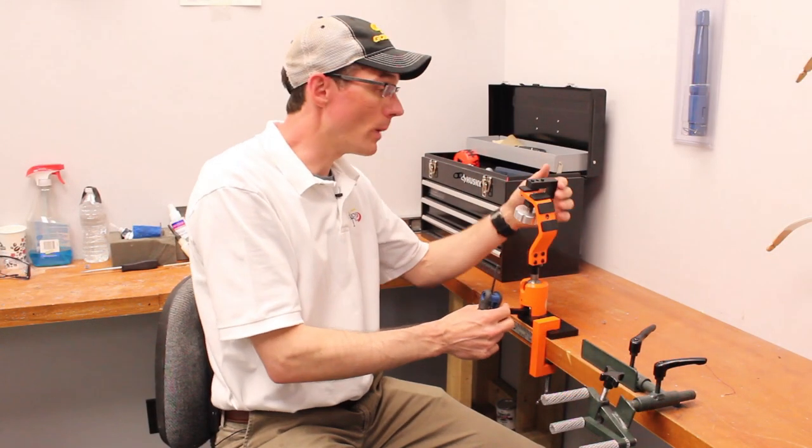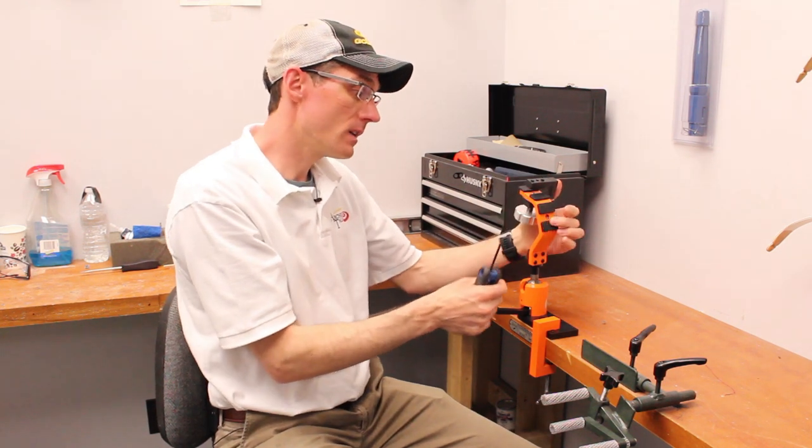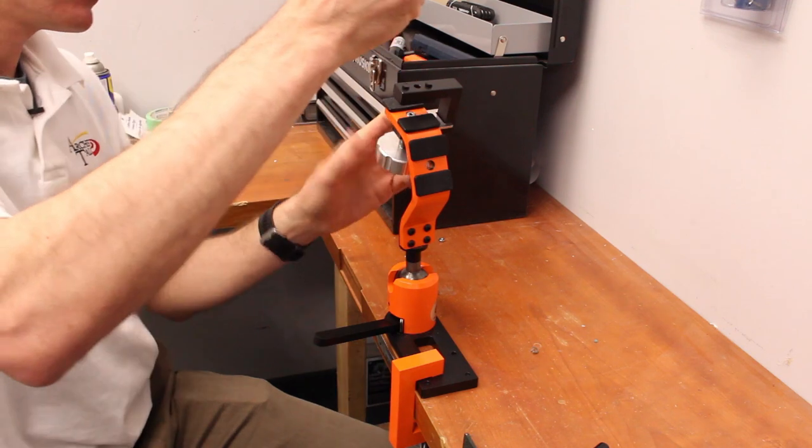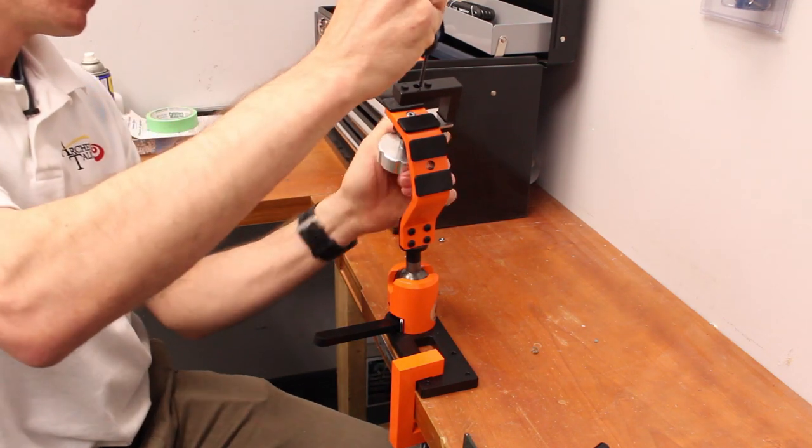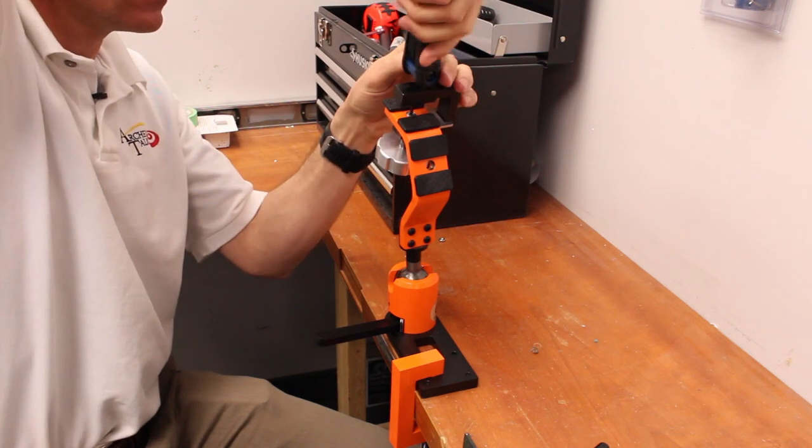Depending on what position you need your bow in, you can actually move the grip of the vise from the top here off to the side and I'll show you how to do that right now. All you need to do to get this thing removed is unscrew the main handle at the bottom and then there's an Allen key you can access in here.